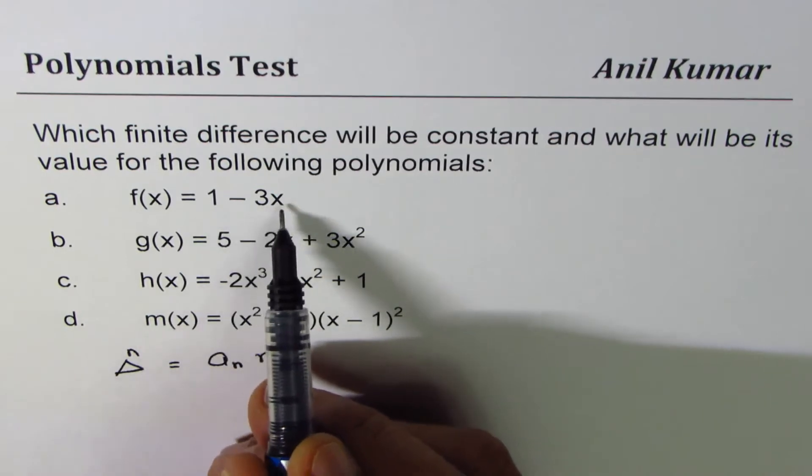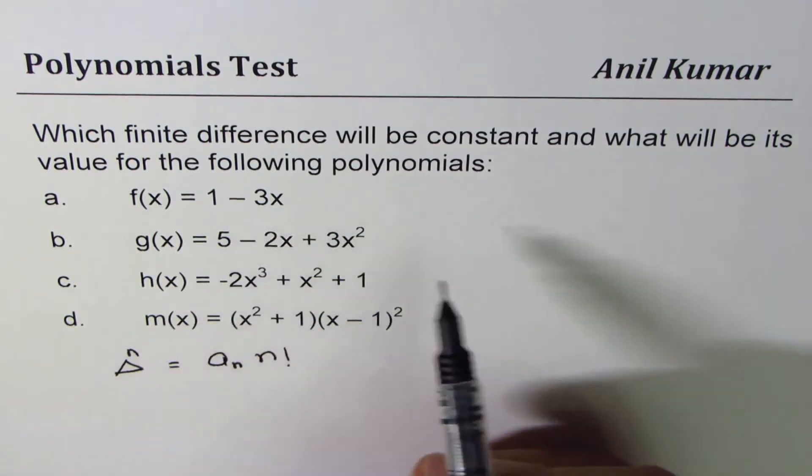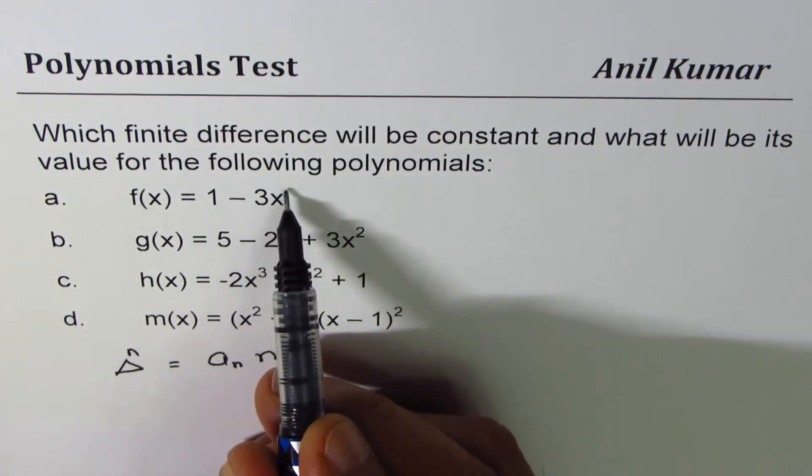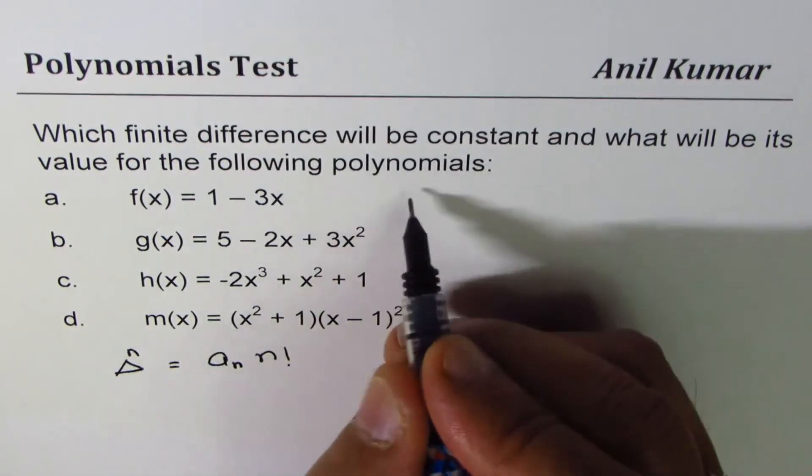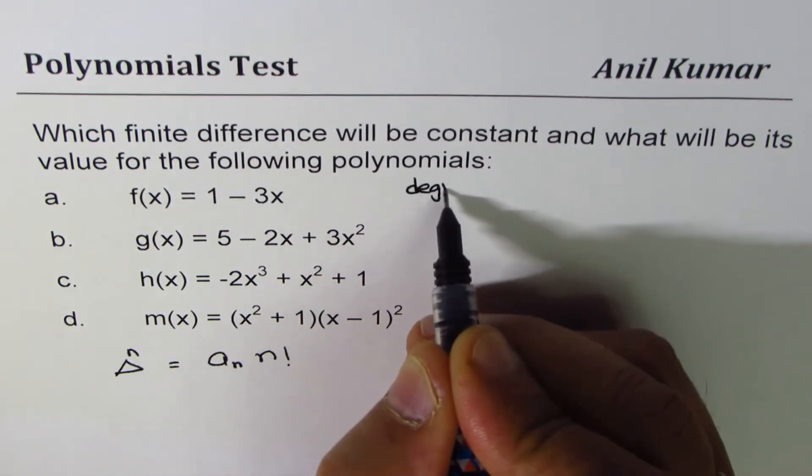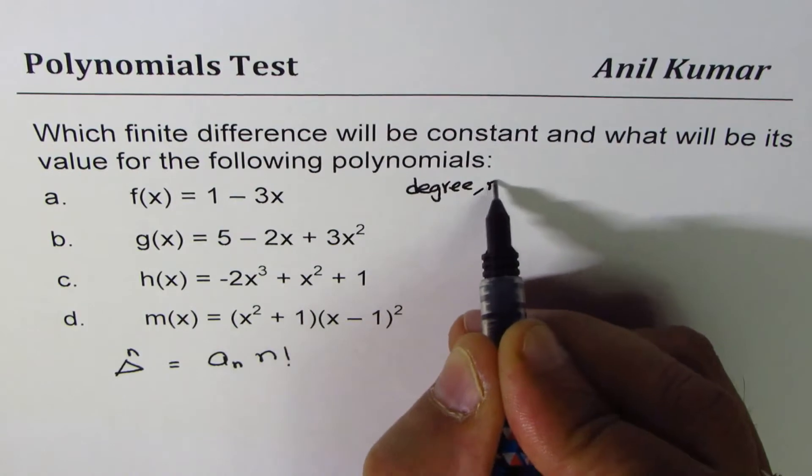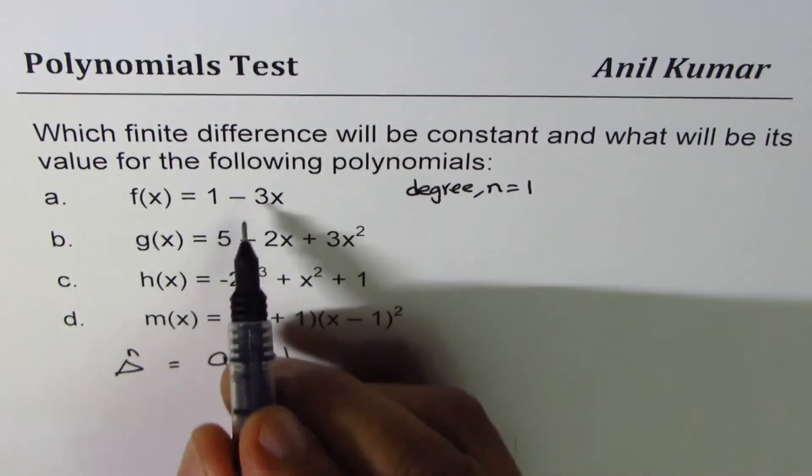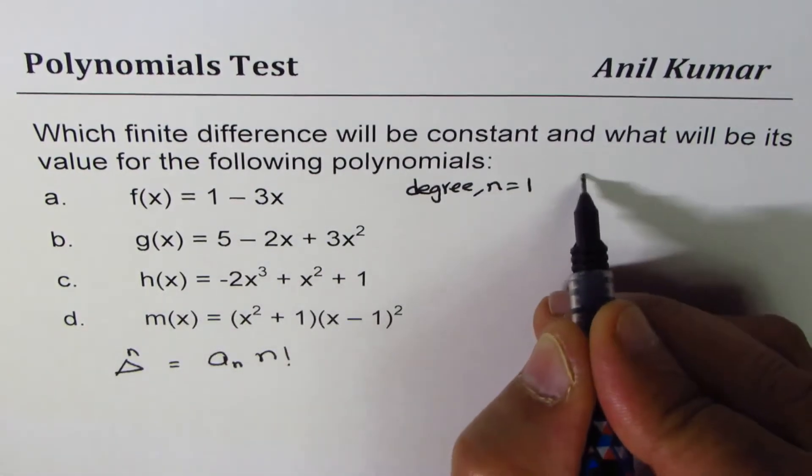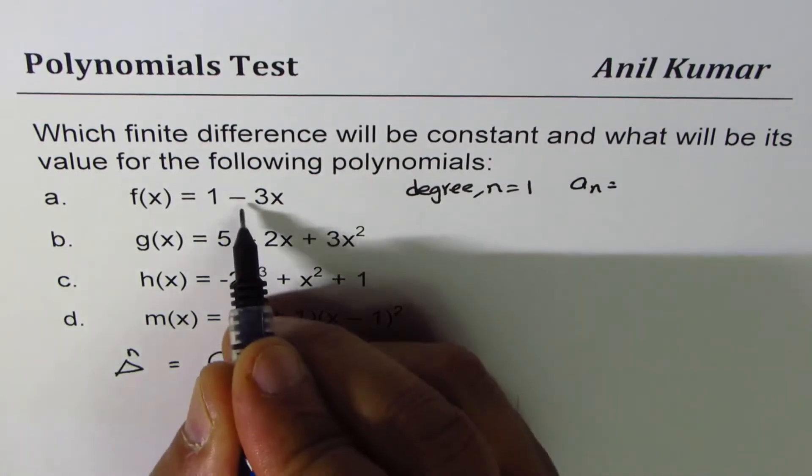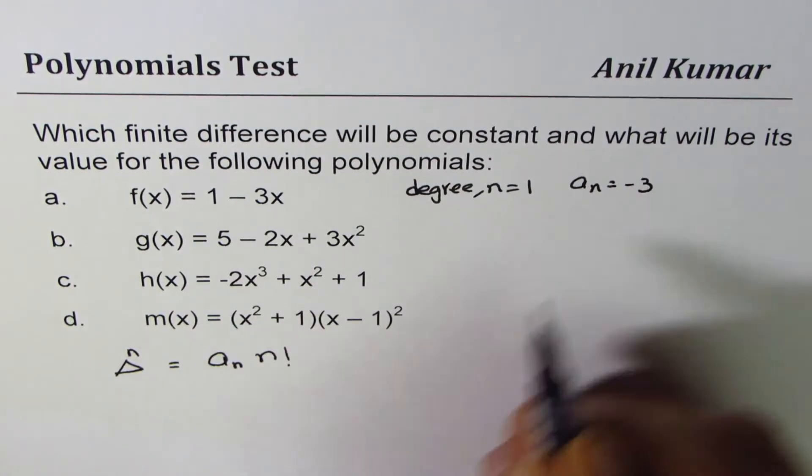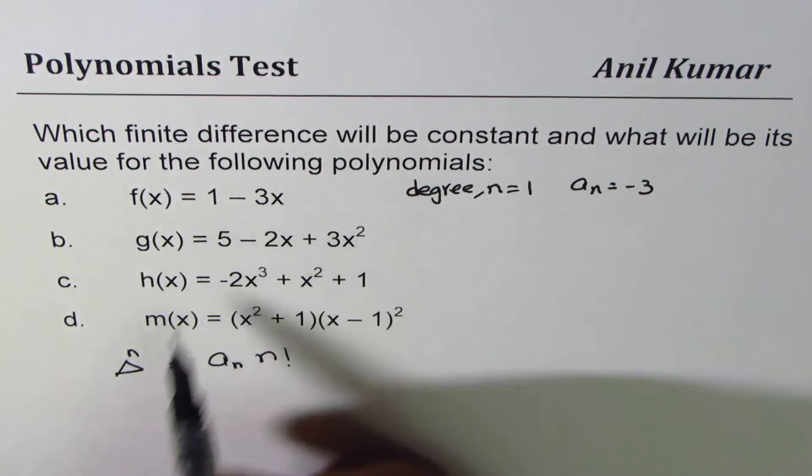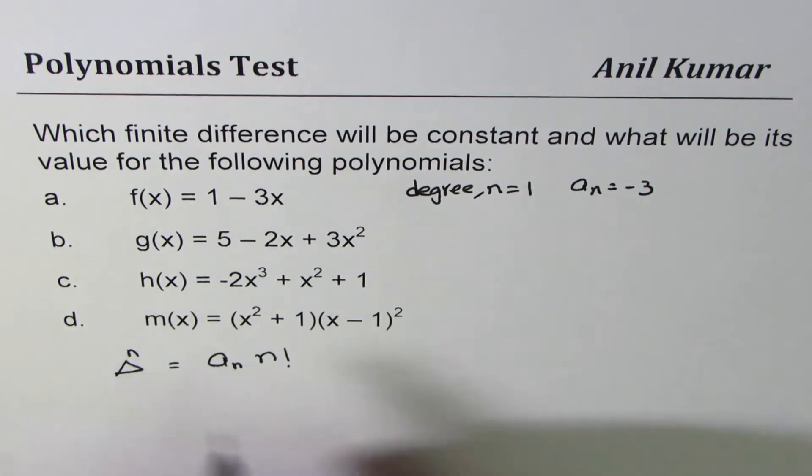The first one here is linear. The degree of the function is 1, so we'll write degree is 1, that is n equals to 1. What is the leading coefficient? a_n is minus 3. And therefore, first finite difference will be constant.